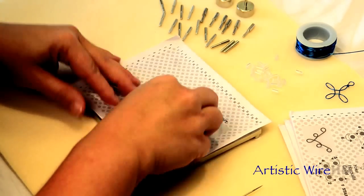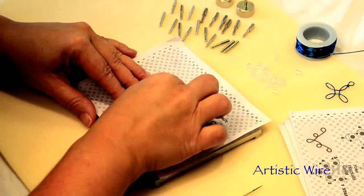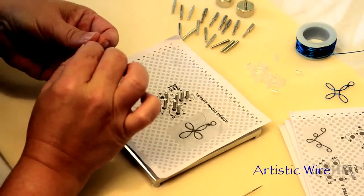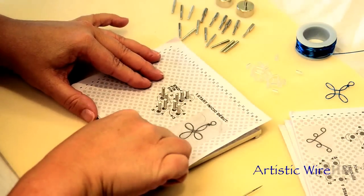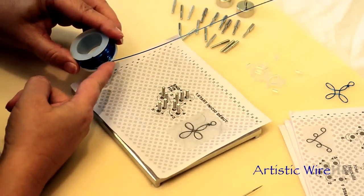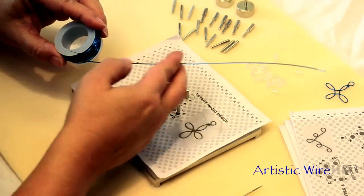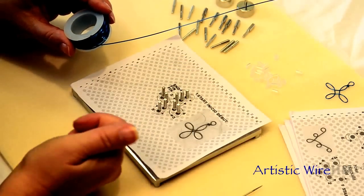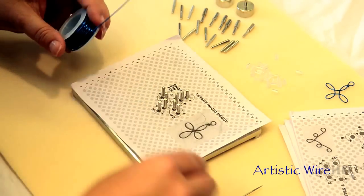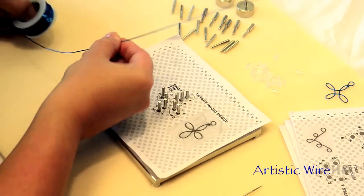And this is so cool because these double pegs are really going to allow us to get that really cool looped shape. Now I'm working with Artistic Wire and this is 20 gauge wire. You can work with anywhere from 18 to 26—those are some of my most favorite sizes.